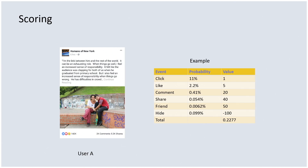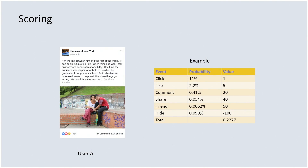For user A, when they load news feed, we rank all the content based on the total score. One important note: all the probability columns are calculated with machine learning models — they have ground truth and are very personalized. The value column is more subjective, based on user studies and product decisions. On Facebook, value is more around interaction with people, so likes and comments are weighted higher than just clicking on a story. The weights and probabilities here are just examples to demonstrate the points.